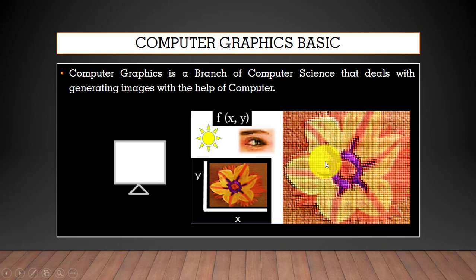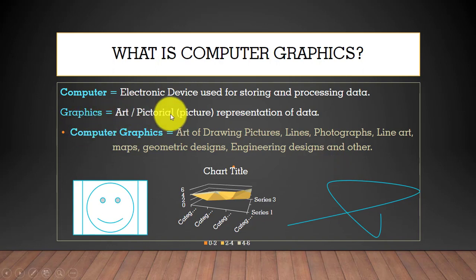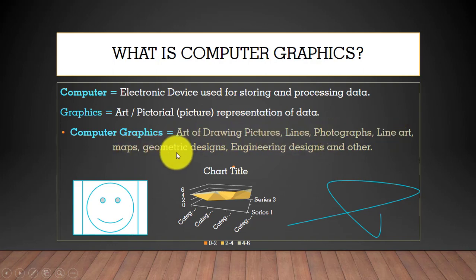In more detail: a computer is an electronic device used for storing and processing data. Graphics is the art or representation of data in the form of pictures. So computer graphics is the art of drawing pictures, lines, photographs, maps, geometric designs, and engineering designs with the help of a computer.